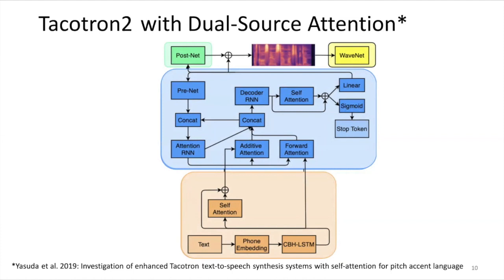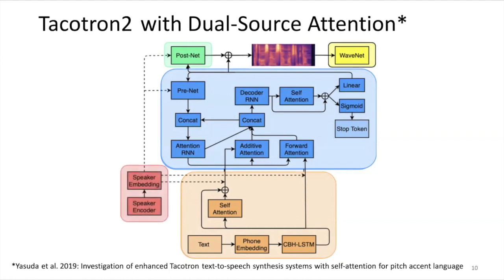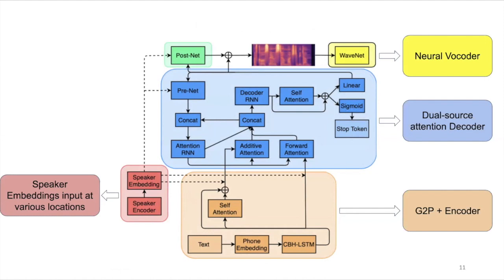What's new in our architecture is the speaker embeddings. We try putting speaker embeddings at three different locations. The first is to concatenate with the outputs of the encoder and input it to the attention. The second is to input to the pre-net. And the third is to input to the post-net.